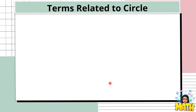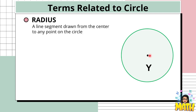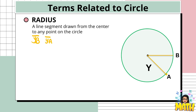Now let's have the different terms related to a circle. Here we still have circle Y with the center at point Y. The first term is the radius. It is a line segment drawn from the center to any point on the circle. For example, from the center to point B, we have drawn a radius. So segment YB is an example of a radius. Another example is segment YA — Y is at the center while point A is on the circle.